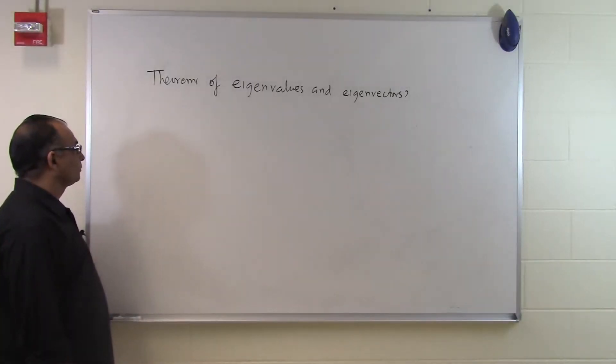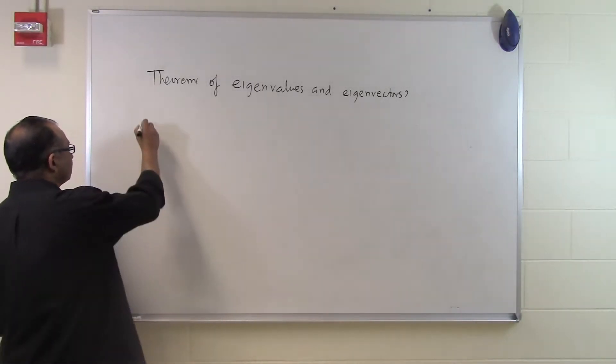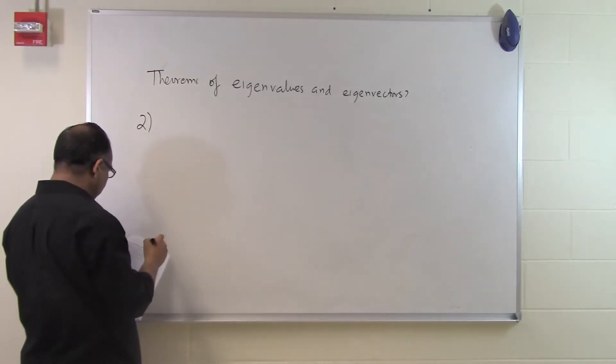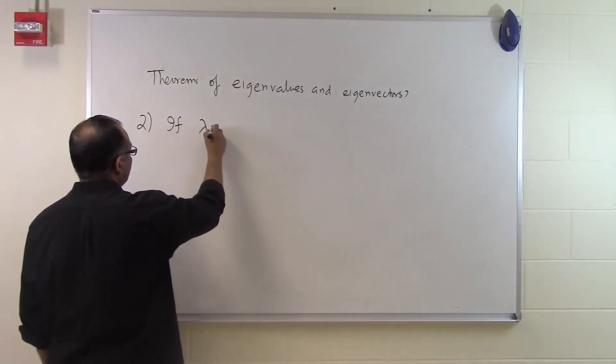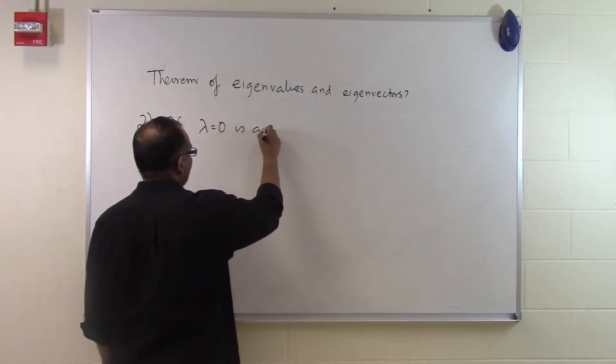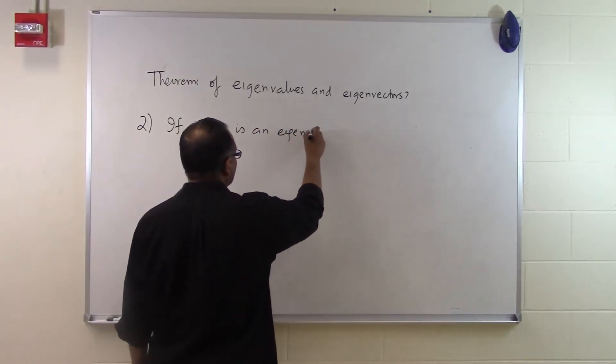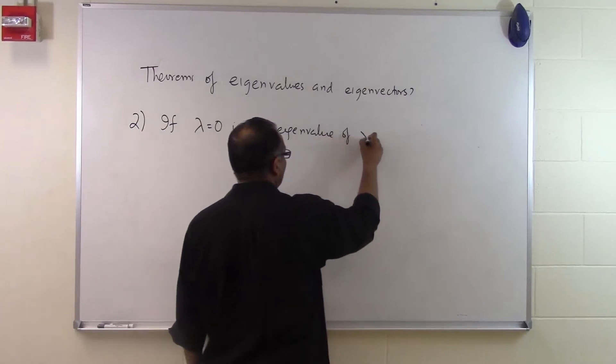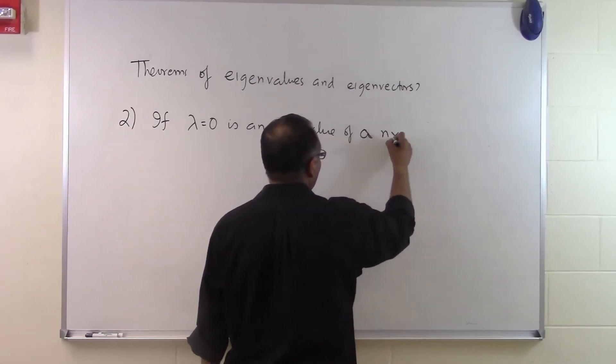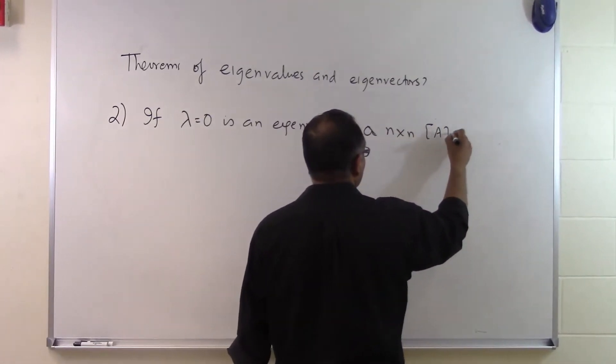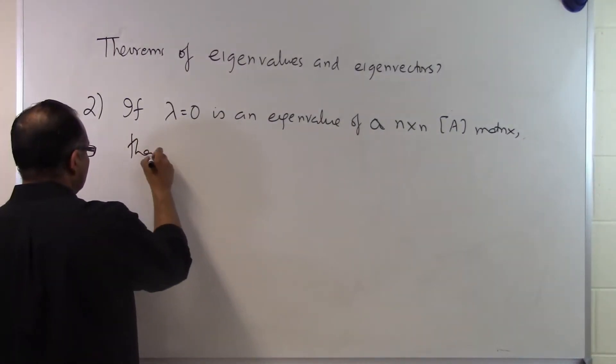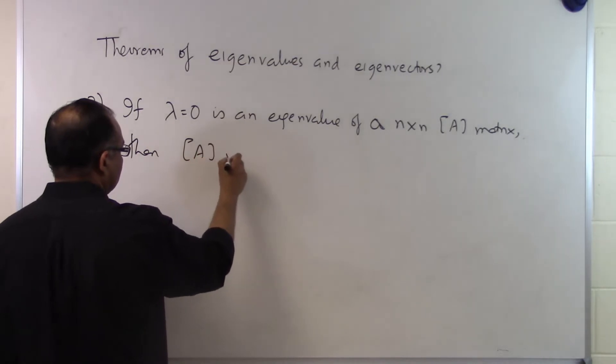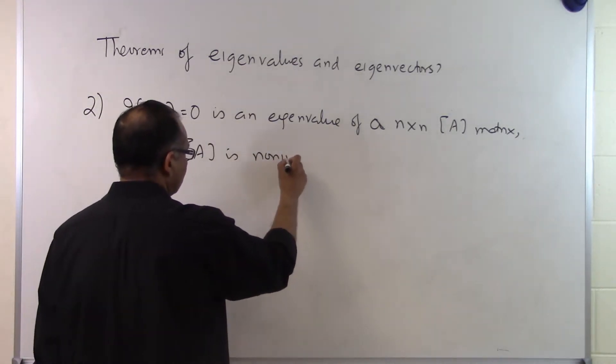In this segment we will talk about some theorems of eigenvalues and eigenvectors. So this is our second theorem right here saying that if lambda equal to 0 is an eigenvalue of a matrix then A is non-invertible.